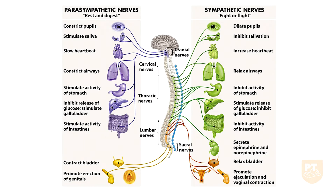The parasympathetic nervous system is considered the rest and digest system. This system conserves and restores energy and maintains bodily functions. Arteries to skeletal muscle are constricted and those to skin and smooth muscles are dilated — for example, smooth muscles in the gut are dilated allowing us to digest a big meal. Fibers arise from cranial nerves 3, 7, 9, and 10, and sacral nerve roots 2 to 4.